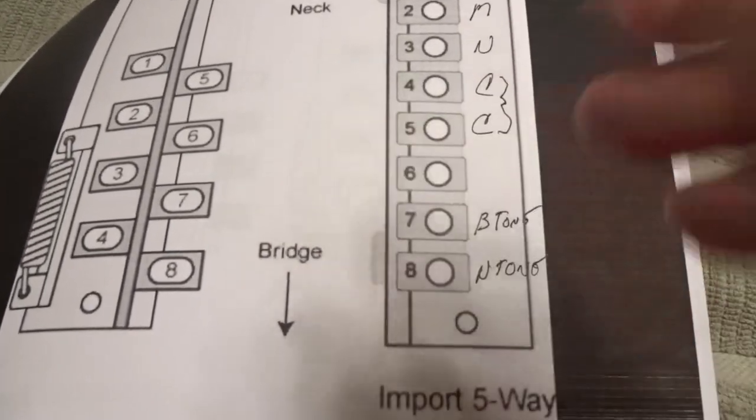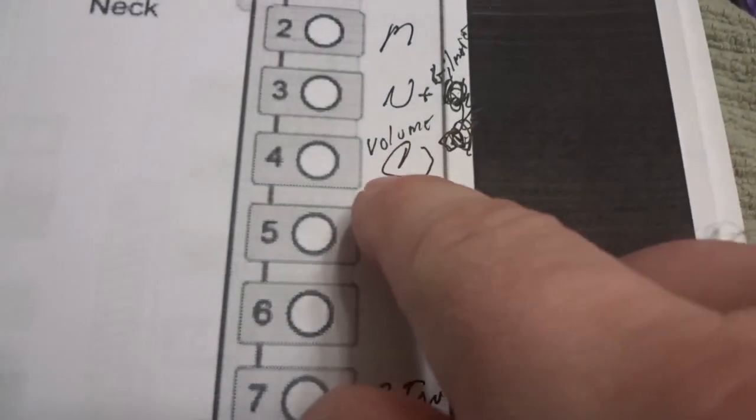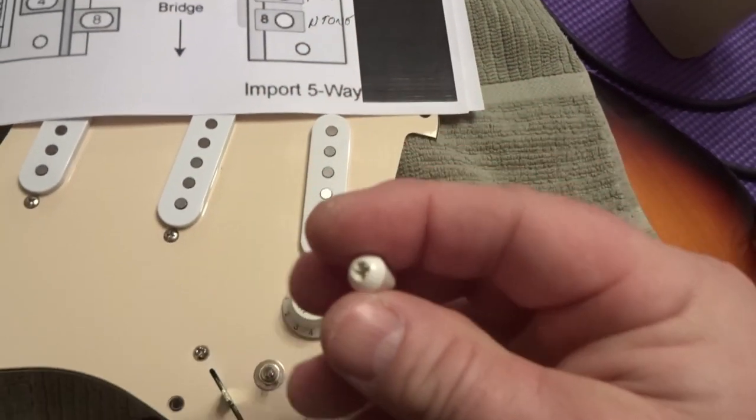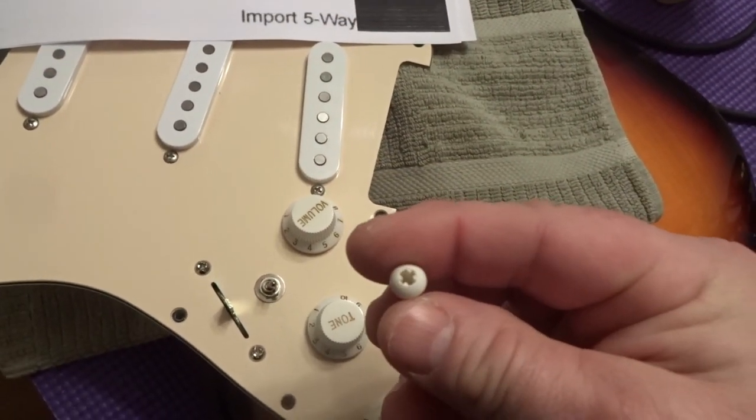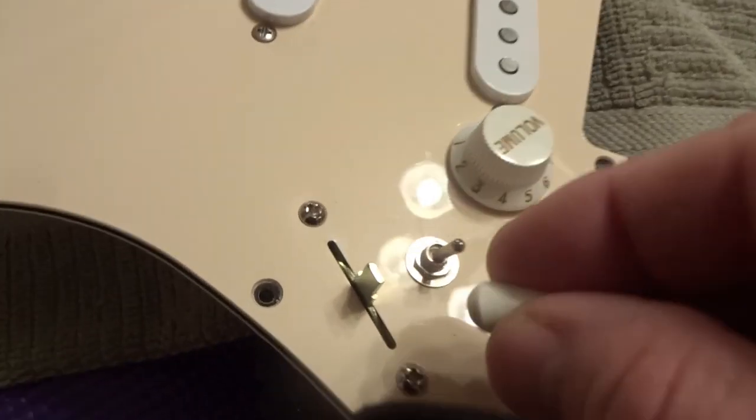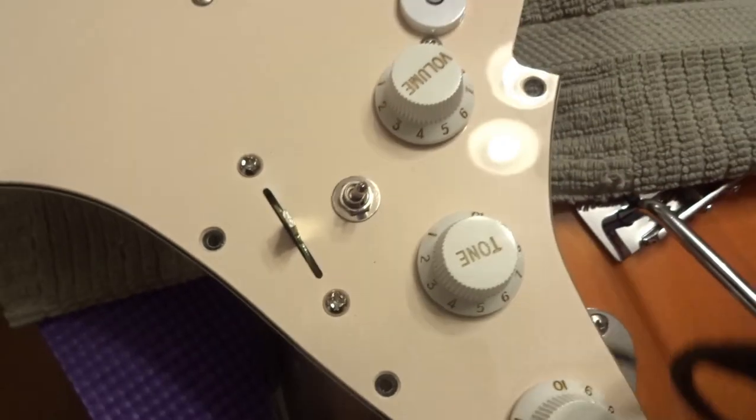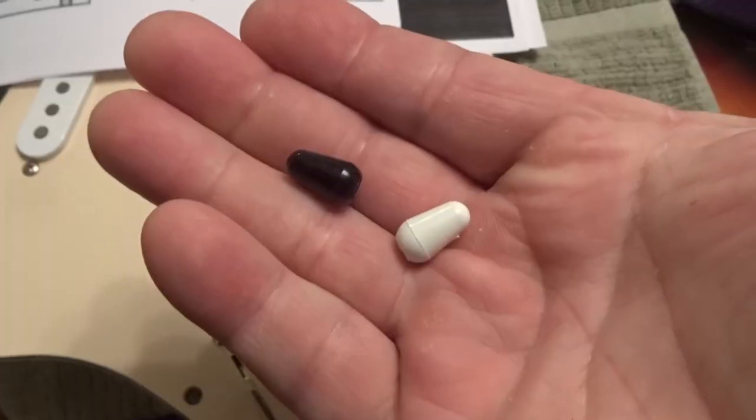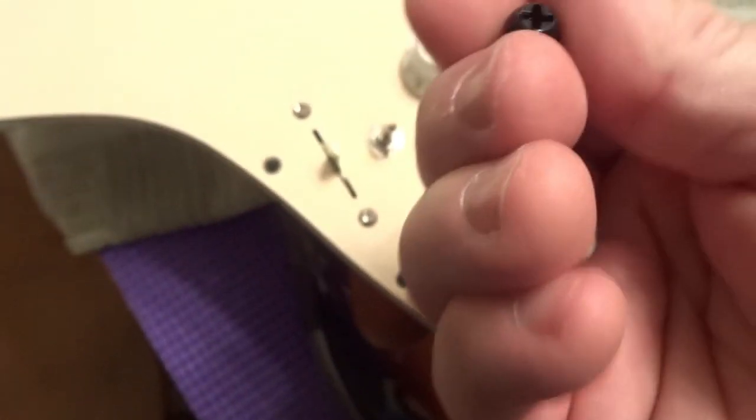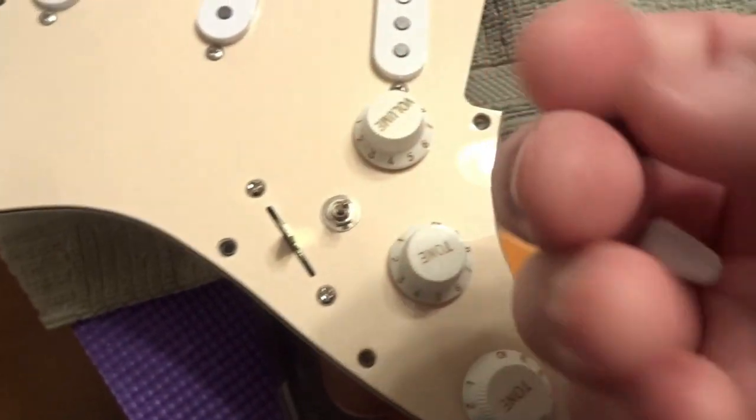So another thing worth noting is your volume pot here, that also connects in with number four common that jumps to number five. And one other thing is this little toggle knob or whatever tip, it's not gonna fit on the new one. The new switch though does come with black or white, so it's up to you what you want to use, but just know they're different as well.